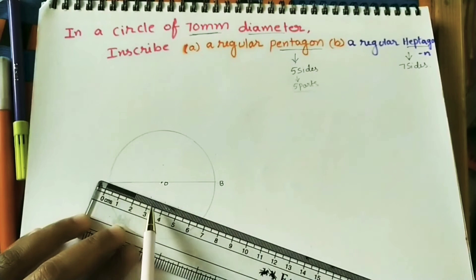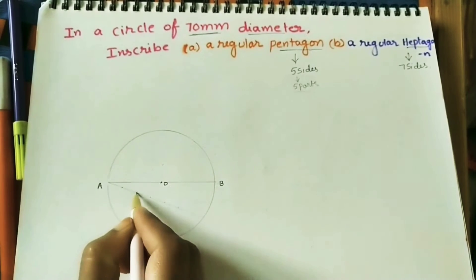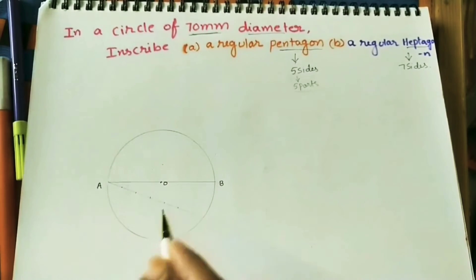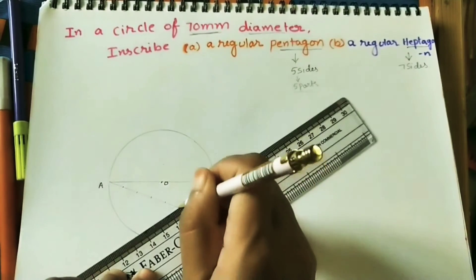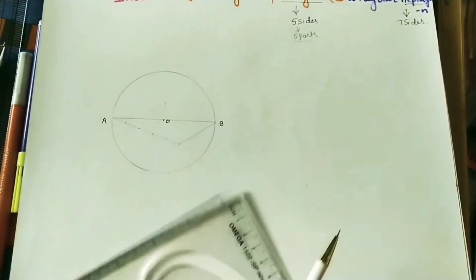1, 2, 3, 4, 5. We can take any length here, 1.5cm, 1cm, approximately. It should be equal. Join last point to the diameter B. And at all the points, do the parallel line, parallel to this last line.